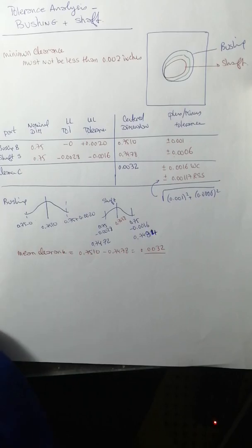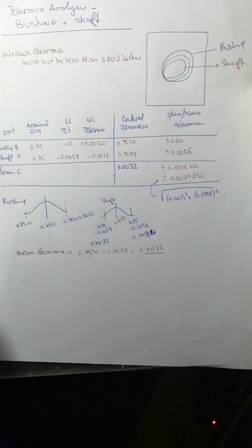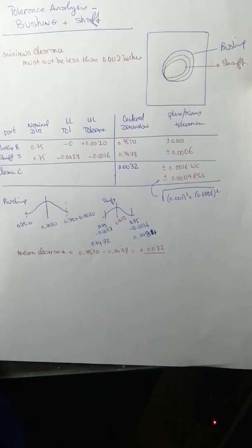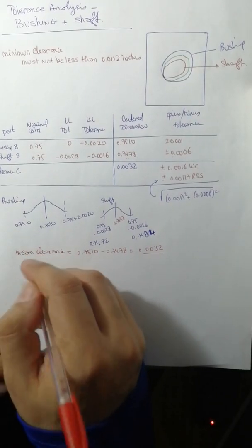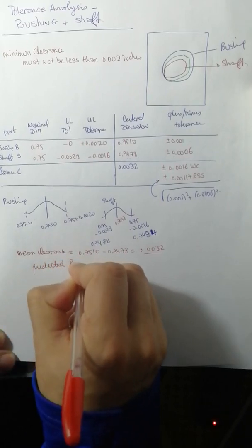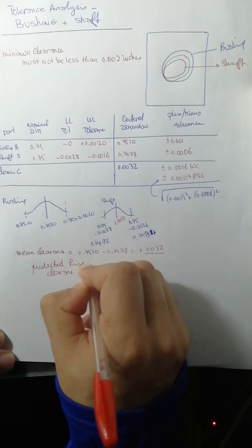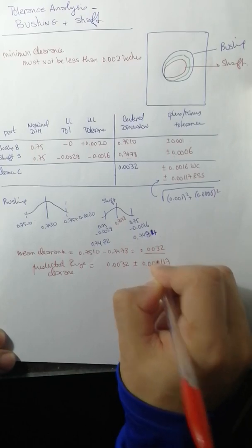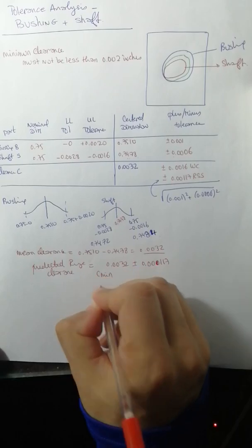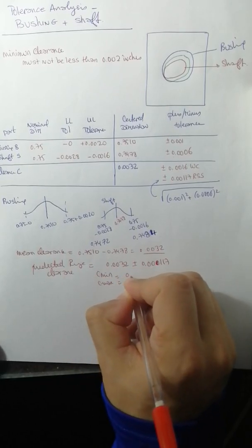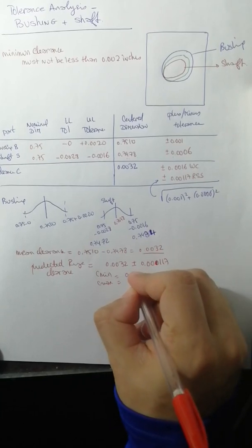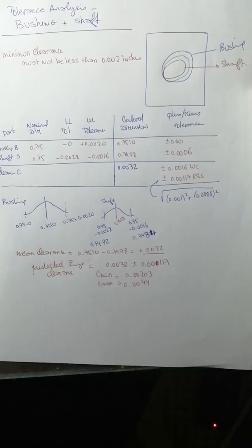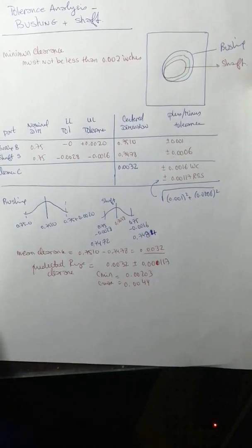The clearance is the difference between the bushing and the shaft. The tolerances are summed - components tolerances are always summed. The predicted range for clearance is 0.0032 plus minus 0.00117. We have C minimum equal to 0.00203 and C maximum equal to 0.0044.